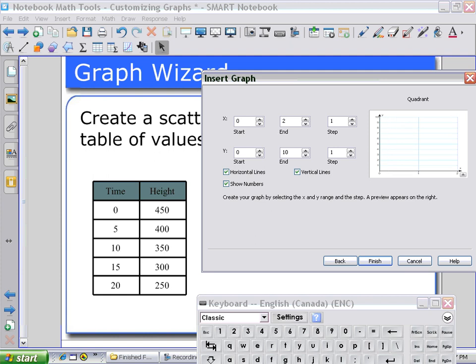So changing the end value to 20. And also the step value, I can up that with the arrows to 5. And you can see it changing on the right side as a preview.